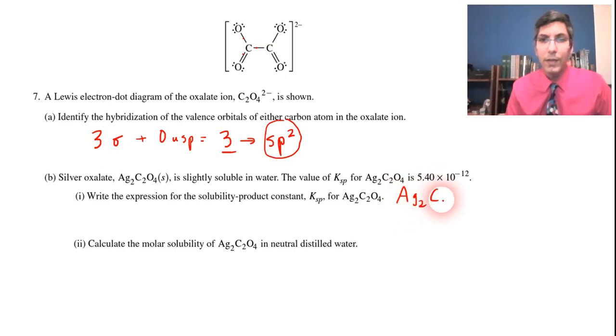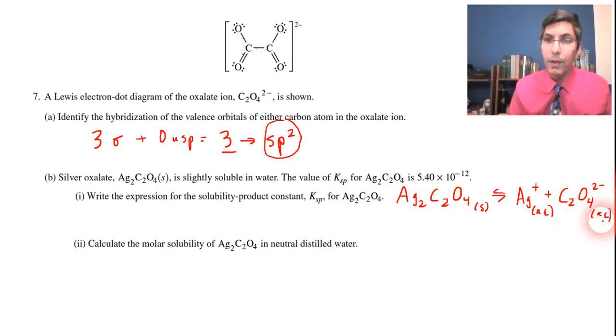So we have Ag2C2O4, and that is a solid. And when it dissociates, we're going to have silver ions, and we're going to have oxalate ions. And ions are always aqueous in solution. And we balance this by, there are two silvers, so we have two right there.